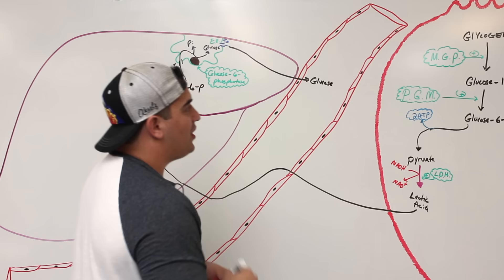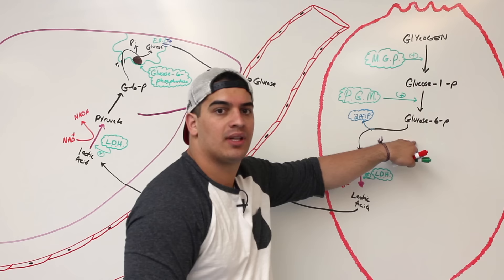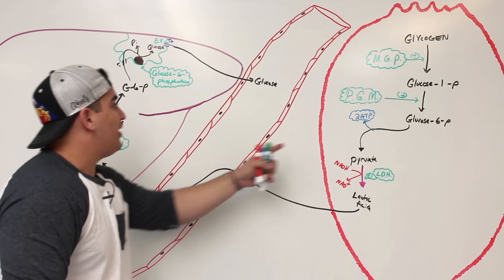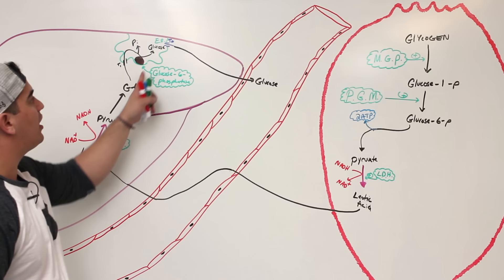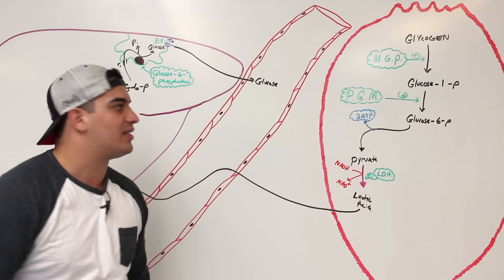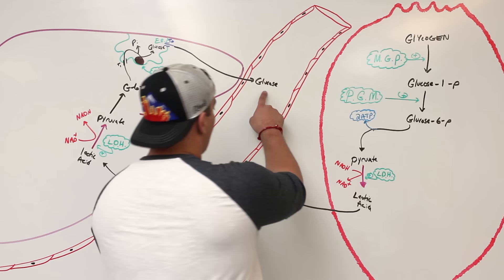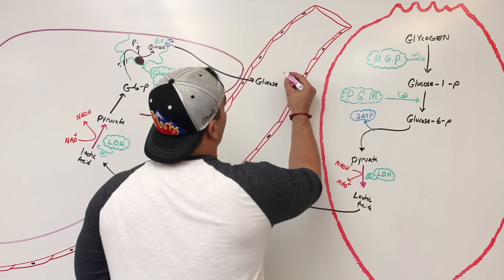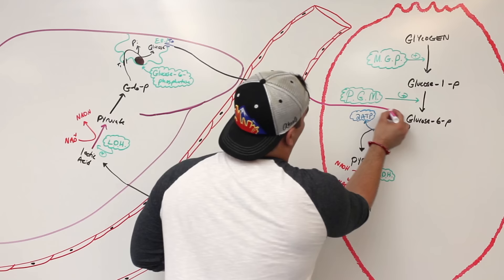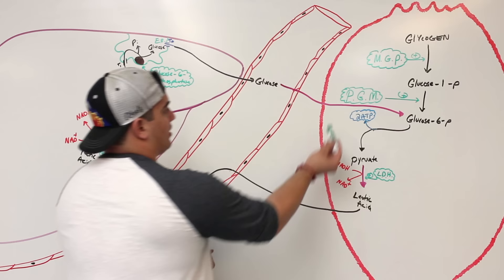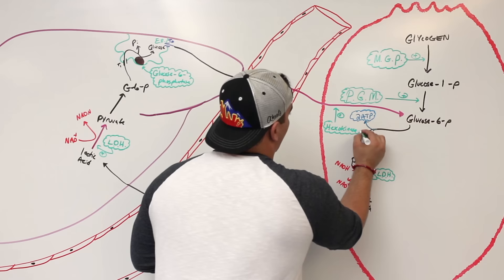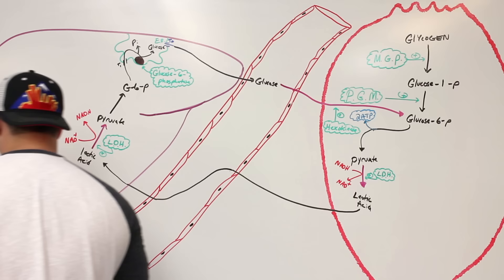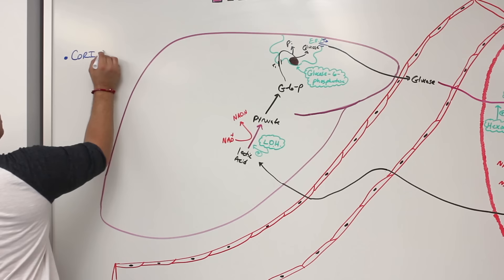So the muscle breaks down glycogen but can only get to glucose-6-phosphate and stops because it lacks glucose-6-phosphatase. The glucose is disguised as lactic acid, transported to the liver, and reconverted into free glucose that can be released into the blood. The cycle is completed when that free glucose is taken back up by the muscle and converted to glucose-6-phosphate via glucokinase or hexokinase. This entire cycle is called the Cori cycle.